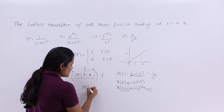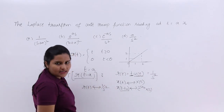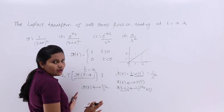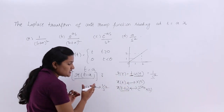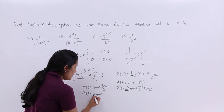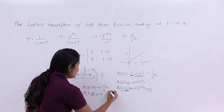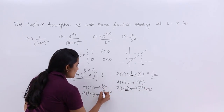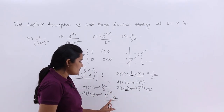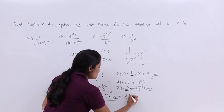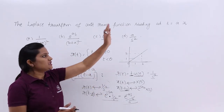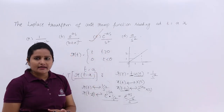Applying this time shifting property to our problem: we know the Laplace transform of R(T) is 1 by S square. We want R(T minus A), so in place of T₀ we have A. We replace it as e power minus S times A, and in place of X(S) we have 1 by S square. So the Laplace transform of R(T minus A) is e power minus AS by S square. This is the Laplace transform of the shifted ramp, i.e., the ramp starting at T equal to A. In the options, this corresponds to Option C.